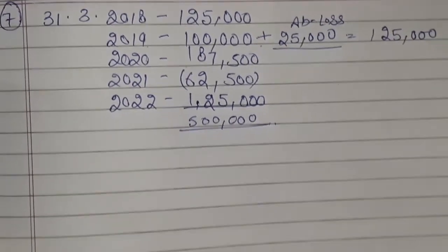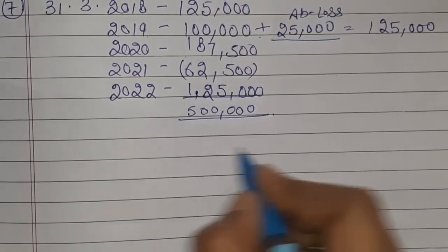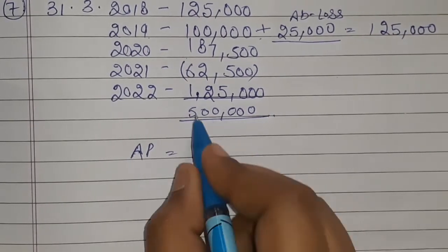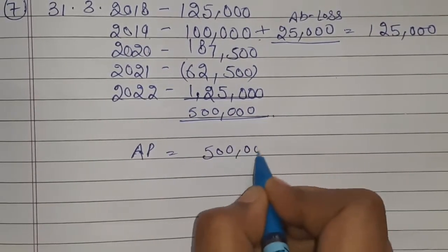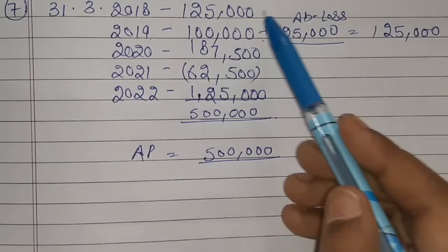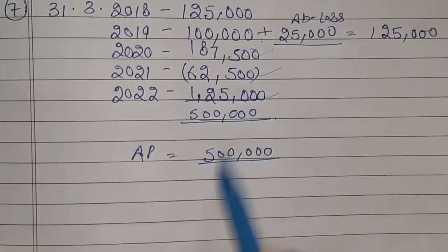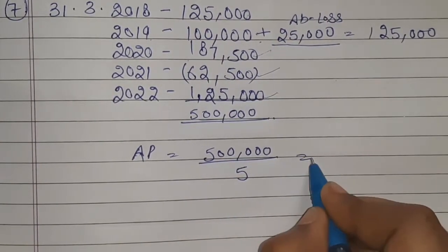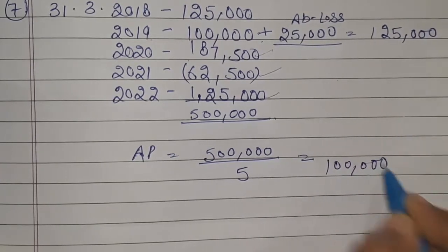Now find the average profit. The total of all adjusted profits divided by 5 years equals the average profit.